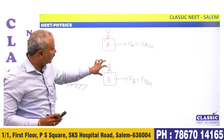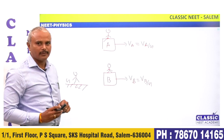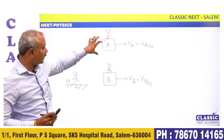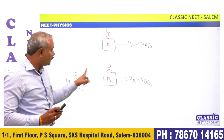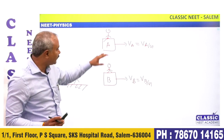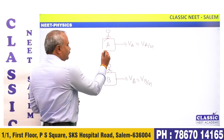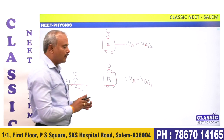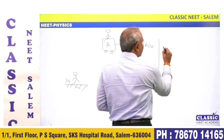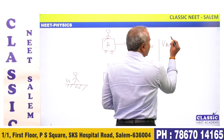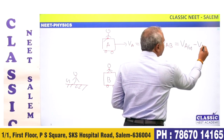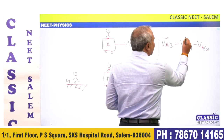If you say the velocity of A with respect to B, that is another issue. If you say the velocity of A, you mean the velocity of A with respect to ground. The velocity of B means the velocity of B with respect to ground. All of this involves vector subtraction.